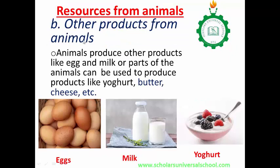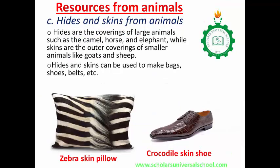Other products from animals — apart from food, you can also get some other products from animals. Animals produce other products like eggs and milk. Parts of the animals can be used to produce products like yogurt, butter, cheese, etc. You can also get milk from a goat, and this milk can be used to produce yogurt. These are all other products gotten from animals aside from food.